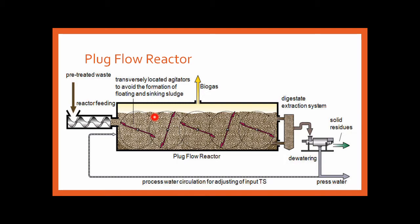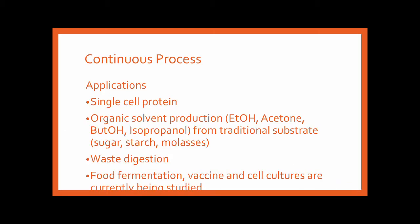The plug flow reactor is continuous because it has continuous input and continuous output. Continuous process applications are typically used for single-cell protein (SCP) production, where the product is the protein-rich cell itself, often added to animal feeds. Since the product is the cell, you want to maintain exponential growth for as long as possible. Other applications include organic solvent production — primarily for primary metabolites — waste digestion, and food fermentation, vaccines, and cell cultures are currently being studied.